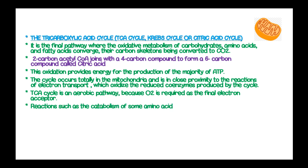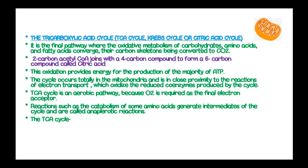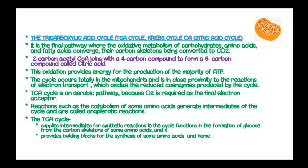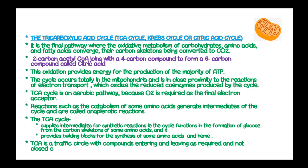Reactions such as catabolism of some amino acids generate intermediates of the cycle and are therefore called anaplerotic reactions. The TCA cycle supplies intermediates for synthetic reactions, such as formation of glucose from carbon skeletons of some amino acids, and it also provides building blocks for synthesis of amino acids and heme. The TCA cycle is a traffic cycle which combines entering and leaving as required, and it is not a closed cycle.